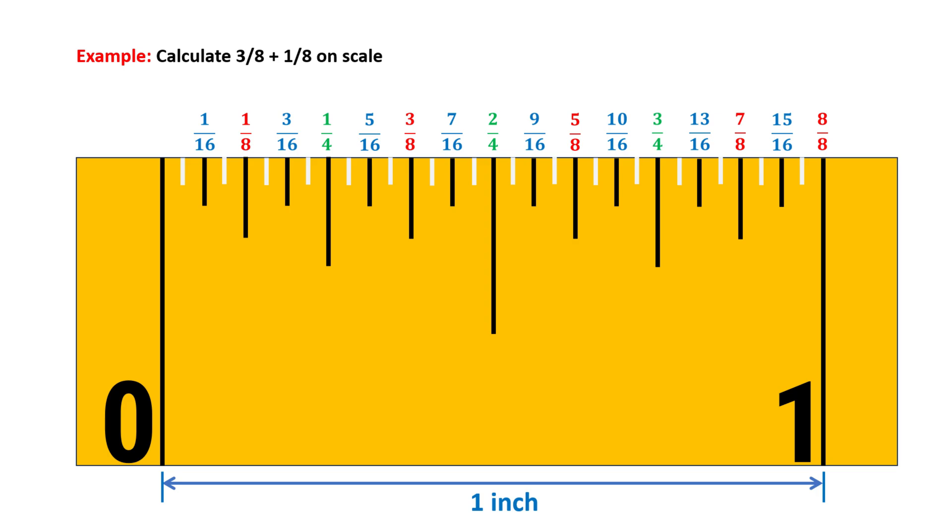For example, to add 3/8ths and 1/8th, count 3 additional 1/8th inch intervals totaling half inch. When adding fractions with the same denominator, simply add the numerators. For instance, 1/8 plus 3/8 equals 4/8, which simplifies to half an inch.